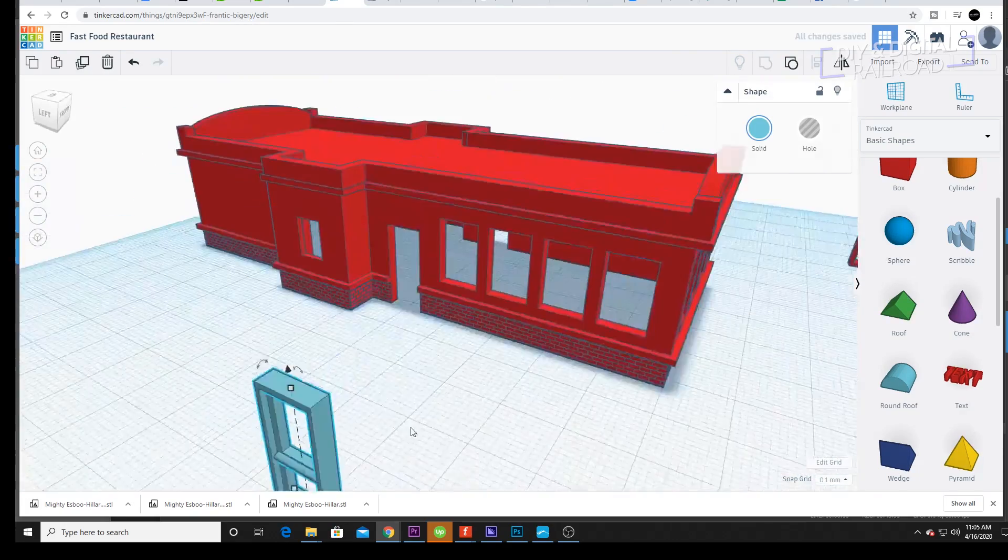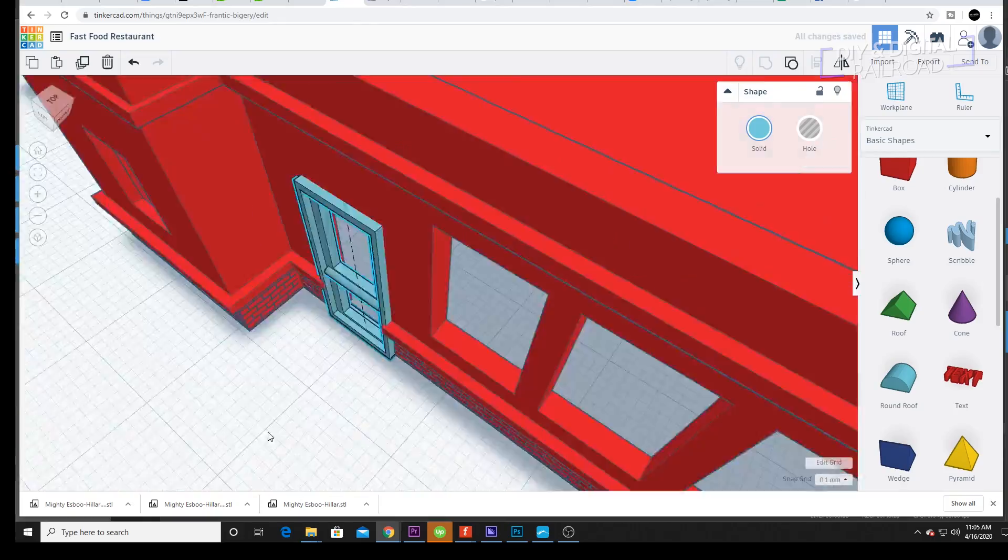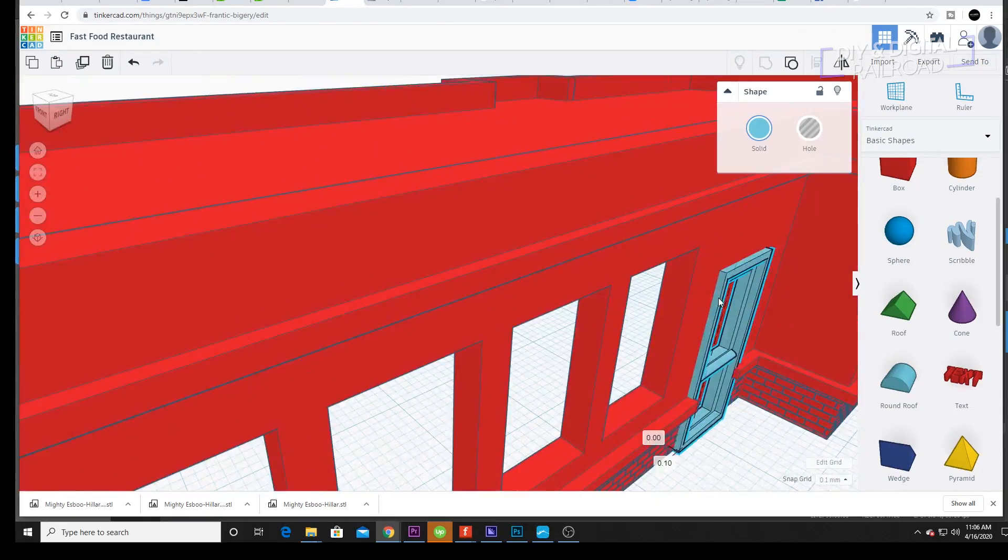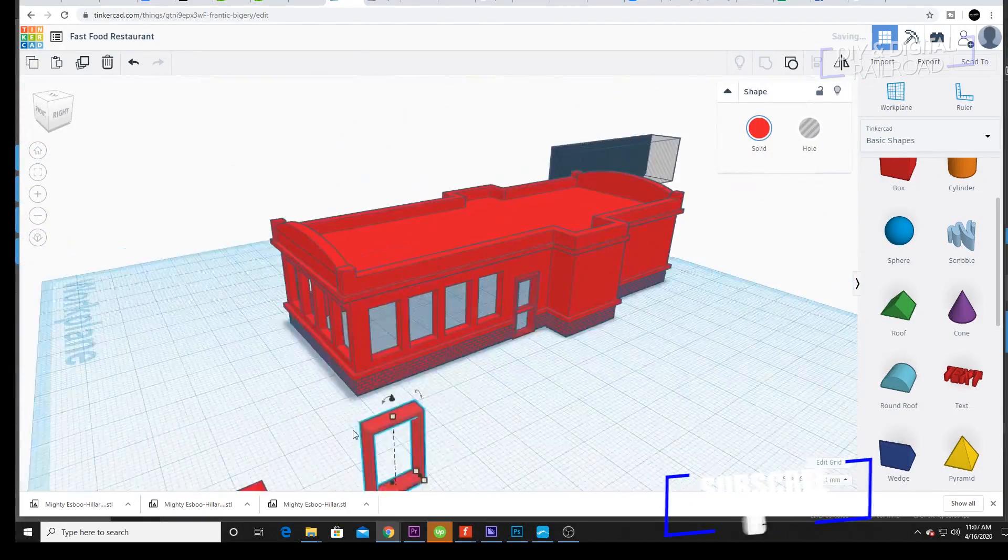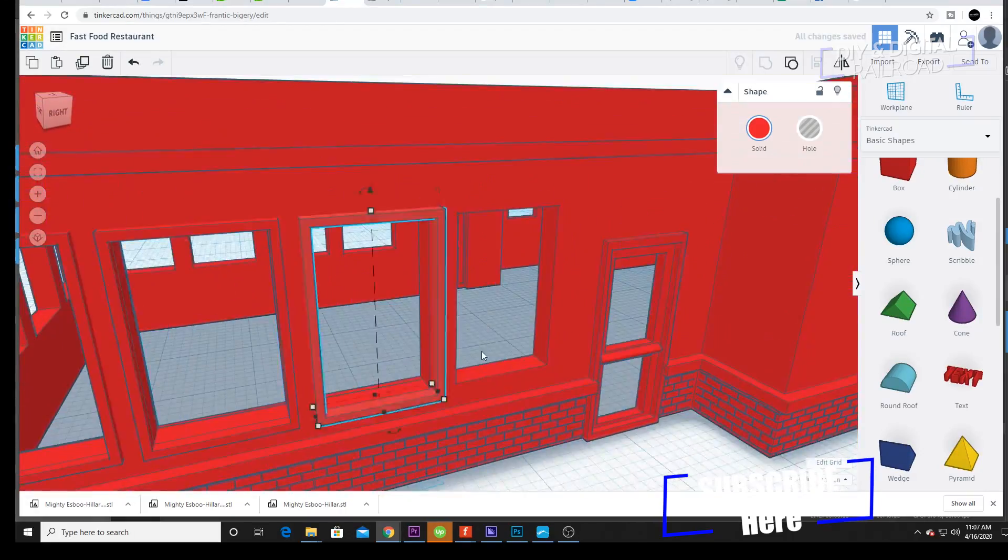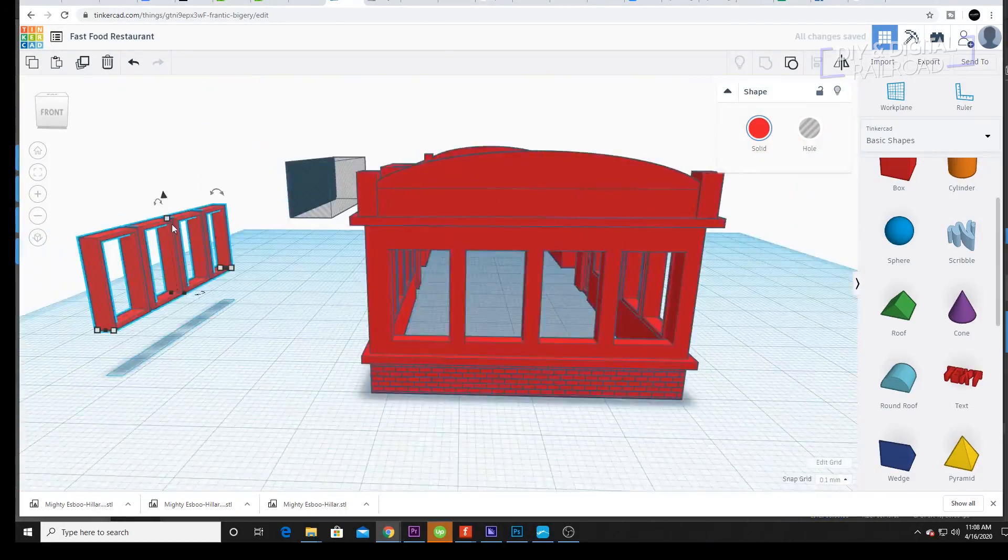I then proceed to create the doors by carving them out with hole cubes. And I'm going for that majority glass door with a little handle in it right there using a semicircle. I then duplicate them and put them on the other side.